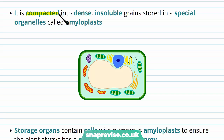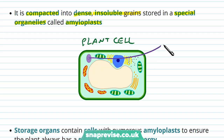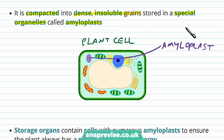Inside the cell, starch is compacted into a dense, insoluble grain or granule stored in a special organelle called the amyloplast. Here's a diagram of a plant cell, and we can see various organelles inside the cell, but one of these organelles is known as an amyloplast. This should be easier to remember because you'll find that starch is made up of molecules which start with 'amylo'.